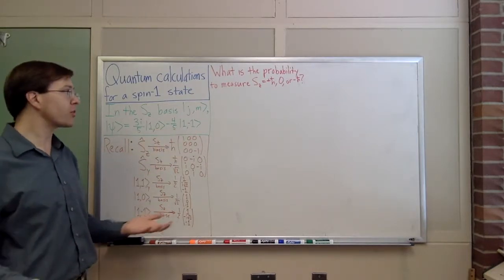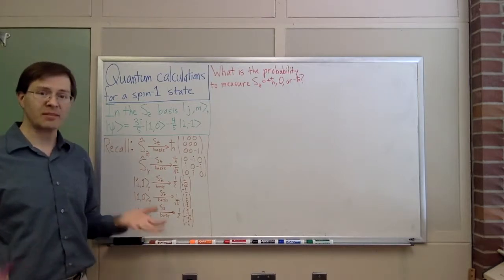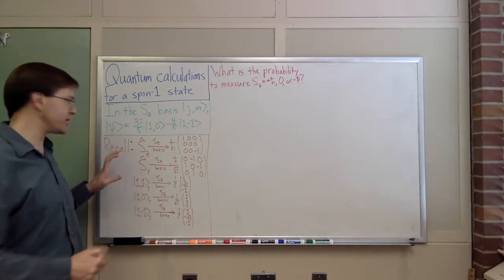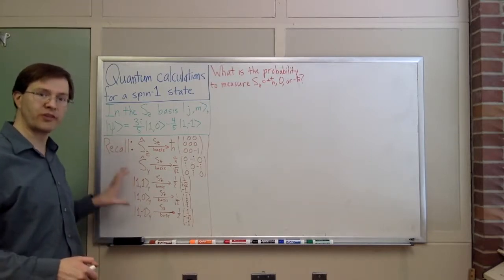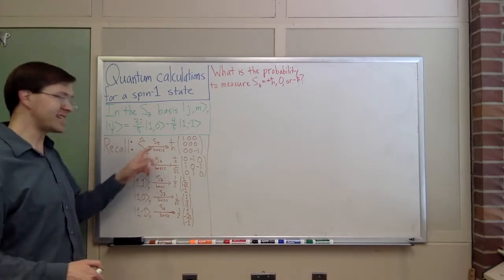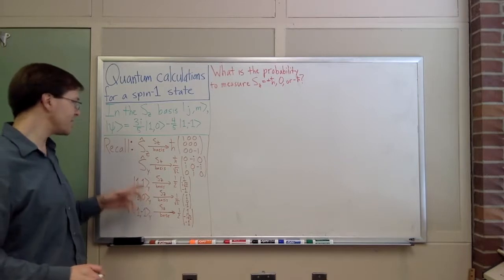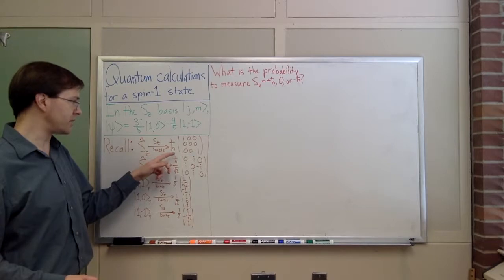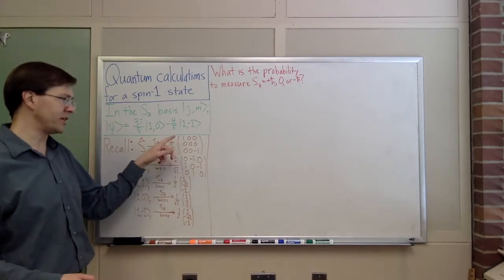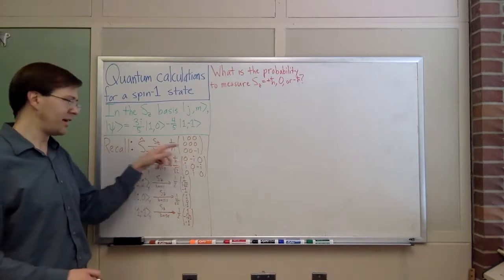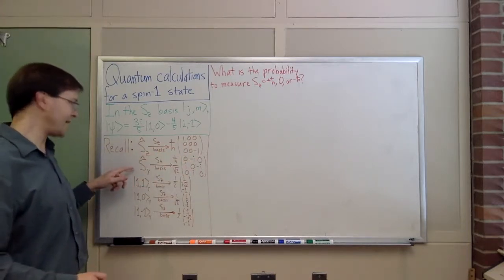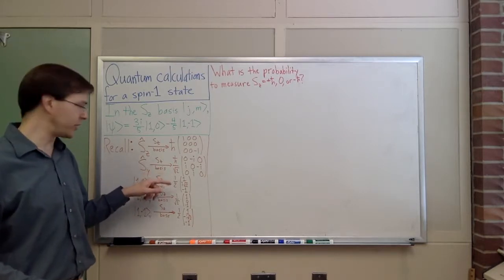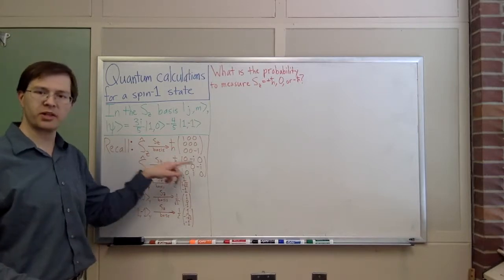That's my defining state. I've got a particle in that state and I'm going to ask some questions about it. Over here for reference later, I've written down matrix representations of a few relevant operators and states in the Sz basis. The Ŝz operator is diagonal with 1, 0, and -1 ℏ eigenvalues. The Ŝy operator in the Sz basis has ℏ/√2 times a matrix with zeros and ±i entries.